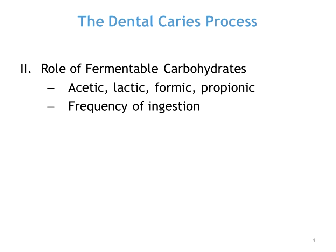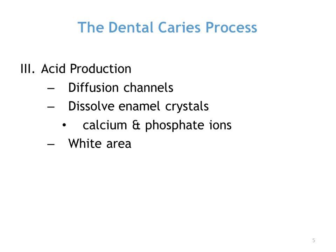Commonly consumed fermentable carbohydrates include sucrose, glucose, fructose, and cooked starch. Acids produced during the metabolic process include acetic, lactic, formic, and propionic acid. Frequent ingestion of fermentable carbohydrates can have a strong influence on the amount of acid produced and the extent of tooth destruction. The acid formed passes freely into the tiny diffusion channels between the enamel rods or the exposed root surface, and the acids can dissolve the enamel crystals into calcium and phosphate ions.